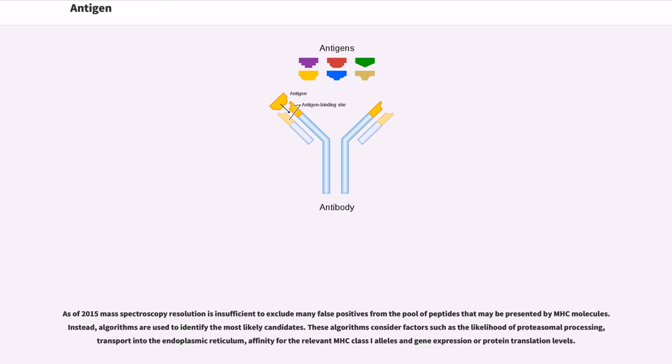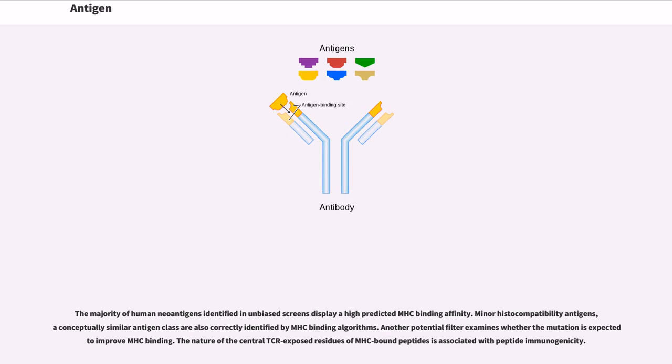These algorithms consider factors such as the likelihood of proteasomal processing, transport into the endoplasmic reticulum, affinity for the relevant MHC class I alleles and gene expression or protein translation levels. The majority of human neoantigens identified in unbiased screens display a high predicted MHC binding affinity.